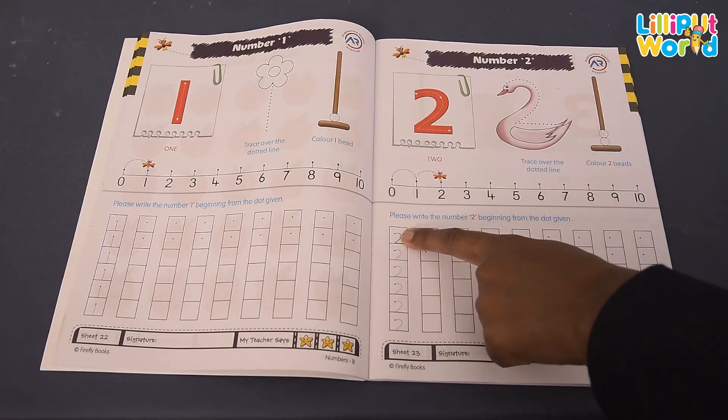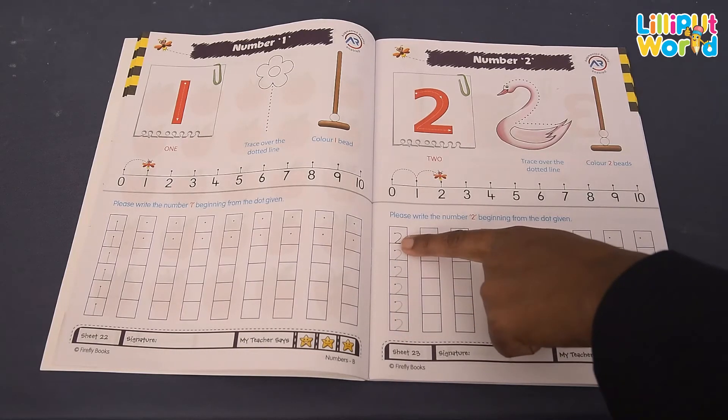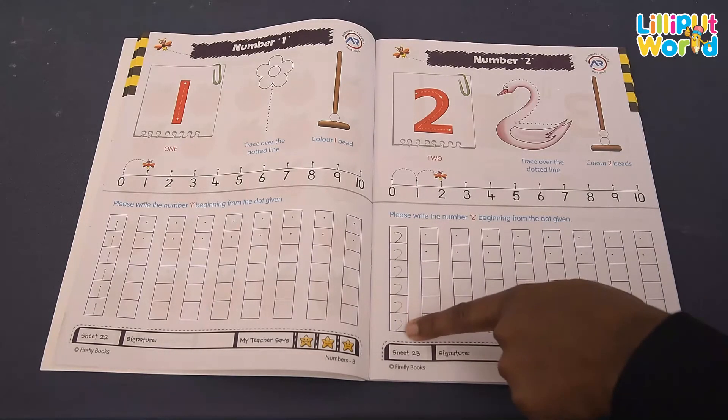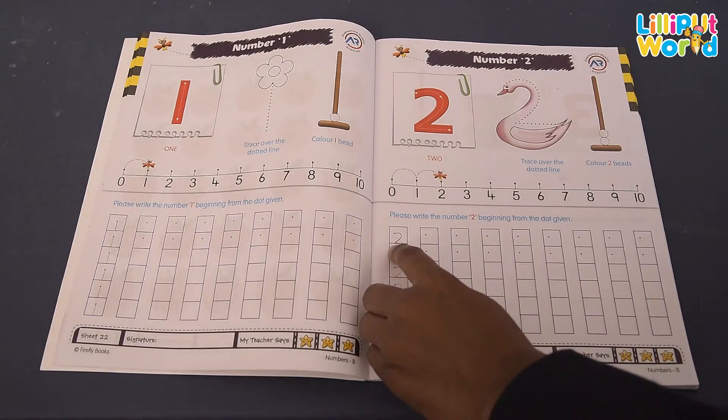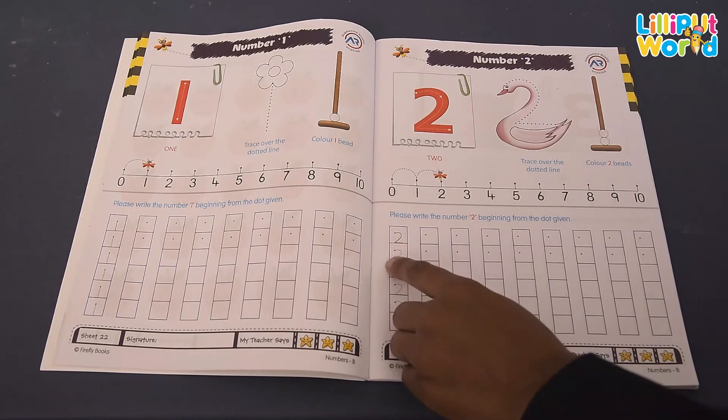Now what you have to do? First you have to trace this line with small pencil. Use small pencil to write, okay? So first you have to trace this all numbers, this number 2. So trace it properly, okay?